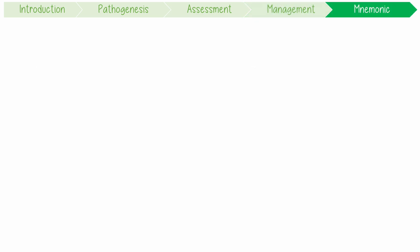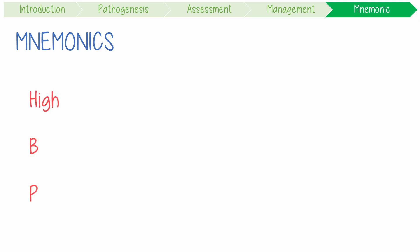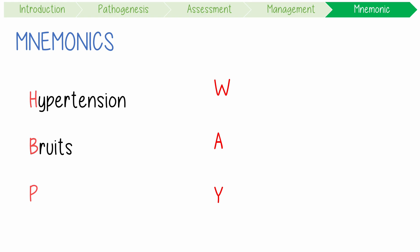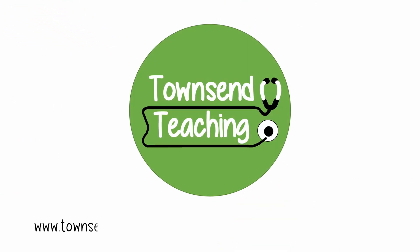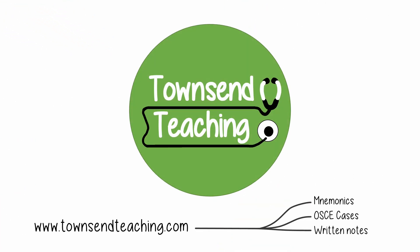Let's summarize with our mnemonic: 'I think that high blood pressure is always in the way.' This reminds us of its features — hypertension, bruits, and upper limb pulselessness — and its demographics: women who are ethnically Asian and young. Thanks for watching Townsend Teachings.